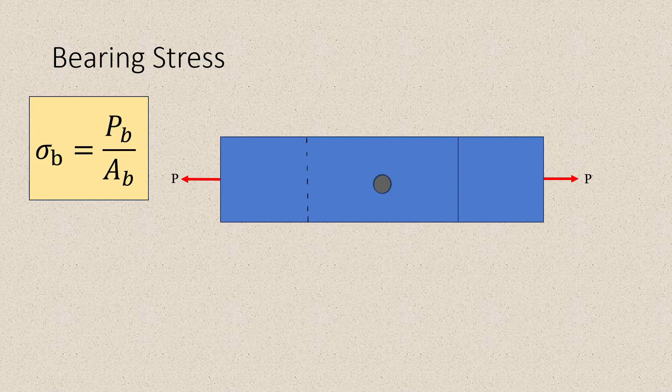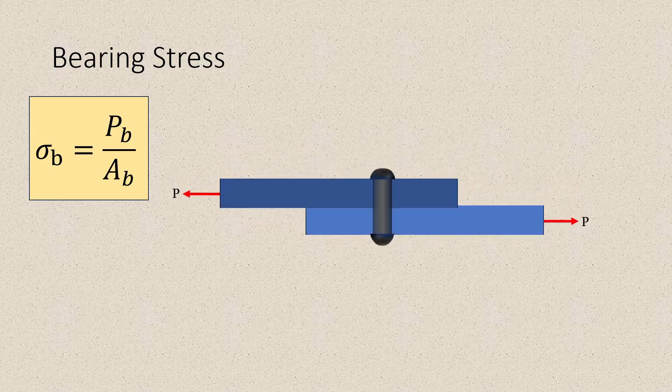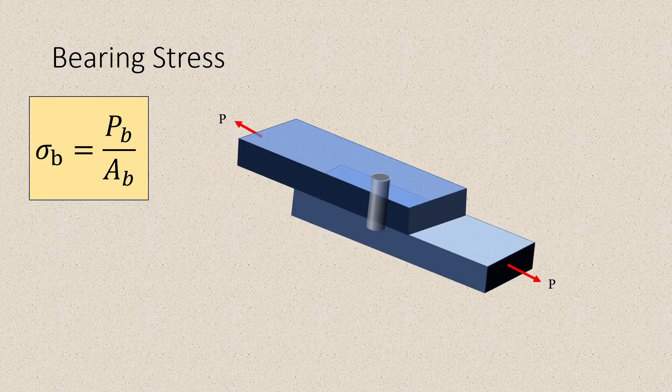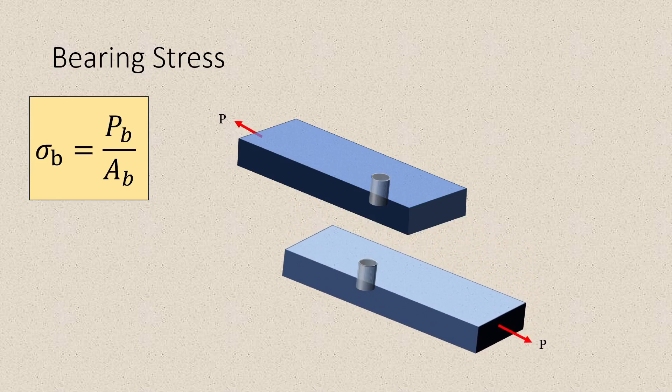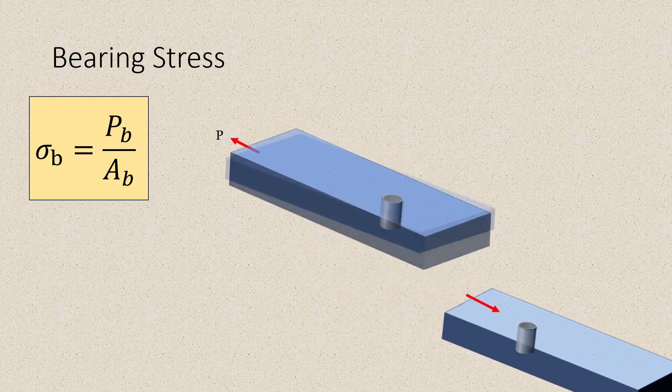Now let's look at our plate from the side. Let's remove our bolt heads so that we can make sense of the bearing area. In the isometric view of our connection, we'll be able to better understand how we can project an area. In order to draw the free body diagram, let's isolate one plate and analyze only the top part.